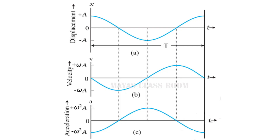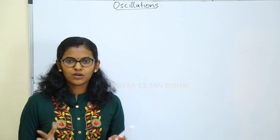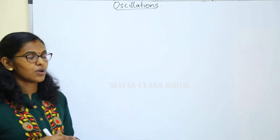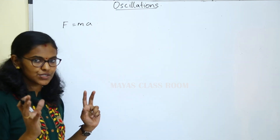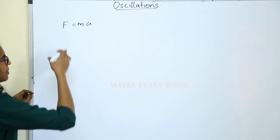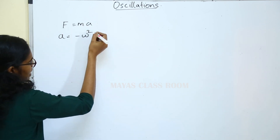This is a graphical representation of the variation of particle displacement, velocity, and acceleration in simple harmonic motion. Graph 1 is the displacement-time graph, graph 2 is the velocity-time graph, and graph 3 is the acceleration-time graph. Now let's look at the force law. The force law is F equals mA. In a simple harmonic motion case, acceleration equals minus omega squared into x.